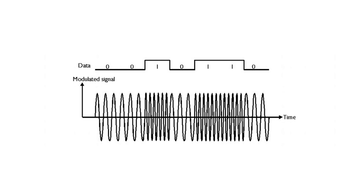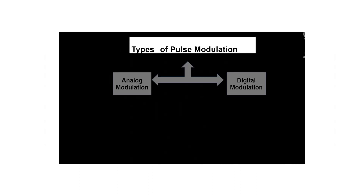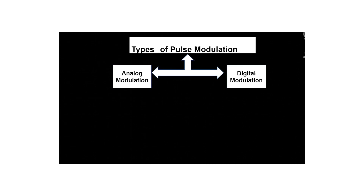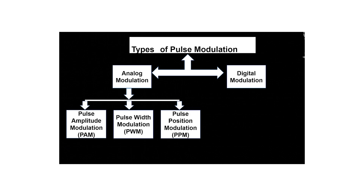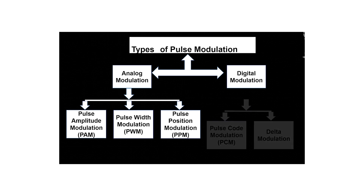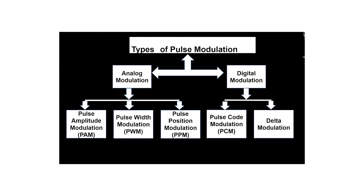A block diagram showing the basic classification of pulse modulation techniques is given. Analog modulations are of three types: pulse amplitude modulation, pulse width modulation, and pulse position modulation. Digital modulations are of two types: pulse code modulation and delta modulation.